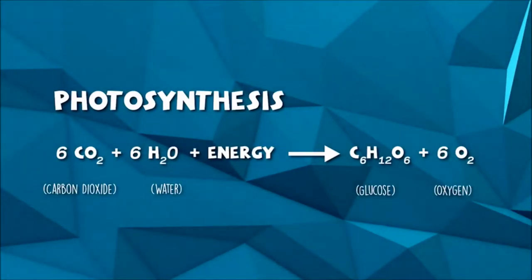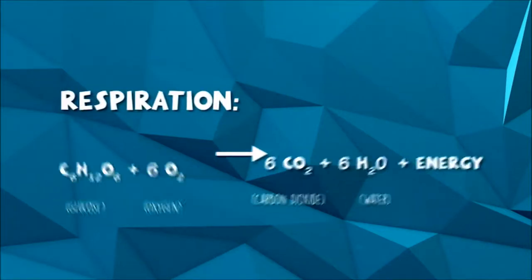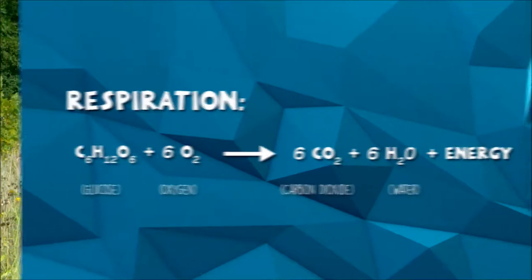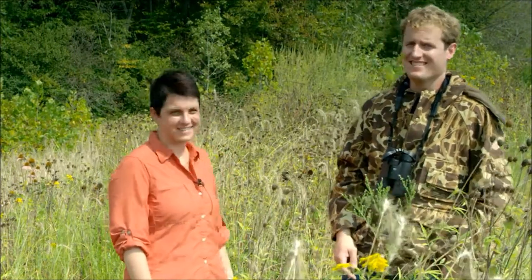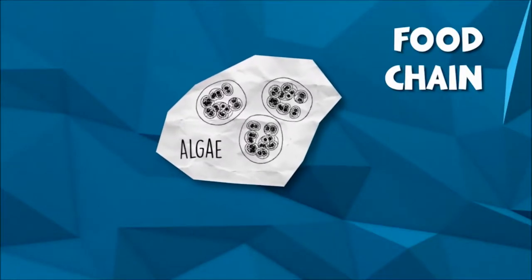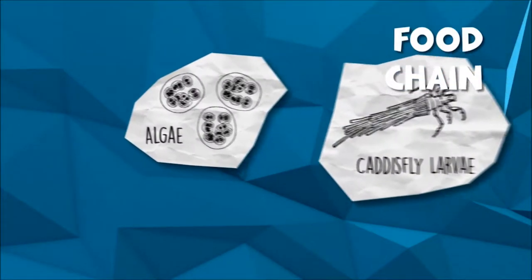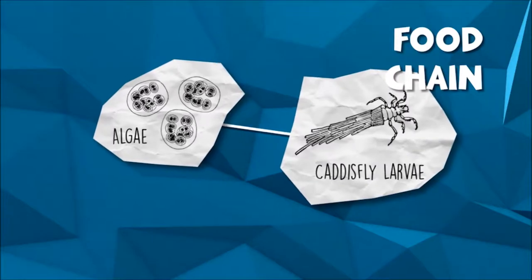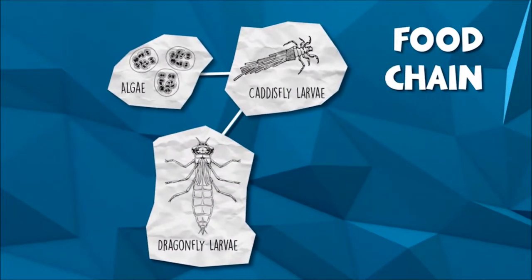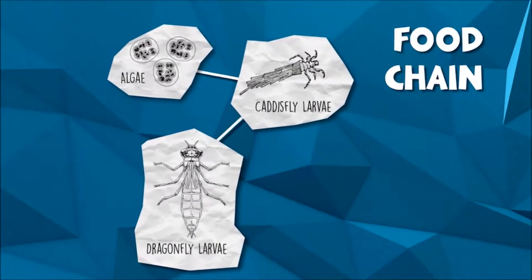Once energy has been captured by plants and algae, it is transferred through the food chain through direct consumption — by getting eaten. One example of a simple food chain is when algae is consumed by small larval insects that eat it by scraping it off of rocks, such as the caddisfly. This insect may then be consumed by a different predatory insect, the dragonfly larvae, and then the dragonfly may be eaten by a fish.